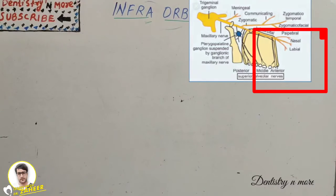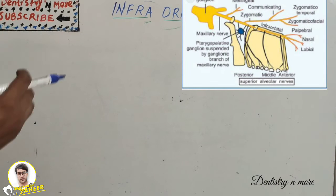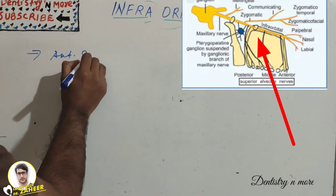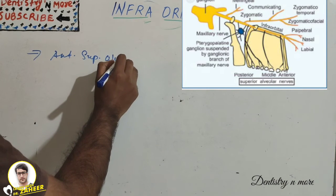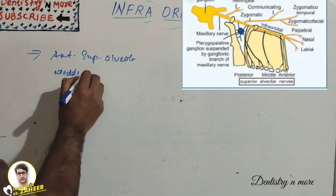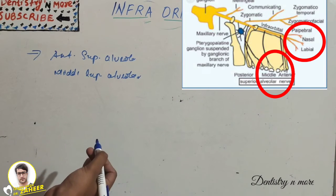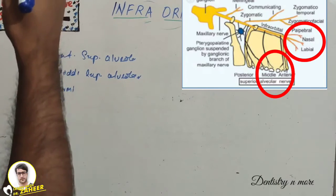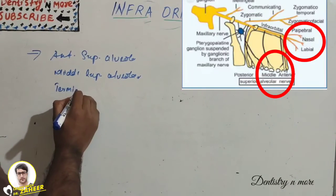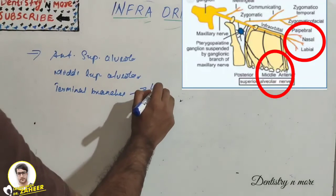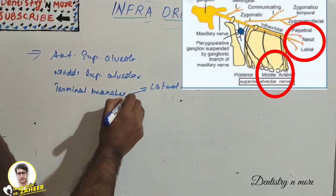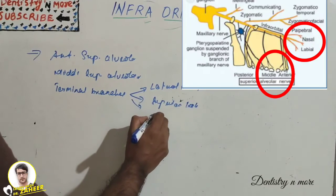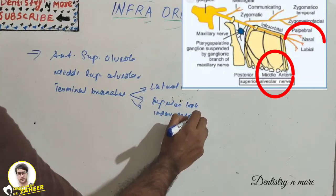Moving on to the infraorbital nerve block: the aim is to deposit anesthetic solution into the infraorbital canal through the infraorbital foramen. This technique anesthetizes the anterior superior alveolar nerve and the middle superior alveolar nerve along with the terminal branches of the infraorbital nerve, which are the inferior palpebral, the lateral nasal, and the superior labial branches — superior labial being above the lip.